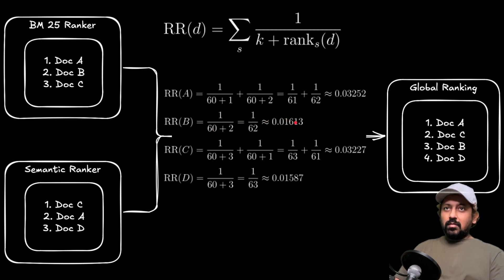And similarly we calculate for C and D, and no matter how many different kinds of rankers you have, this is the way you add. And D also appears just once in the semantic ranker and it's at rank 3, so we say 1 over 60 plus 3, 1 over 63.